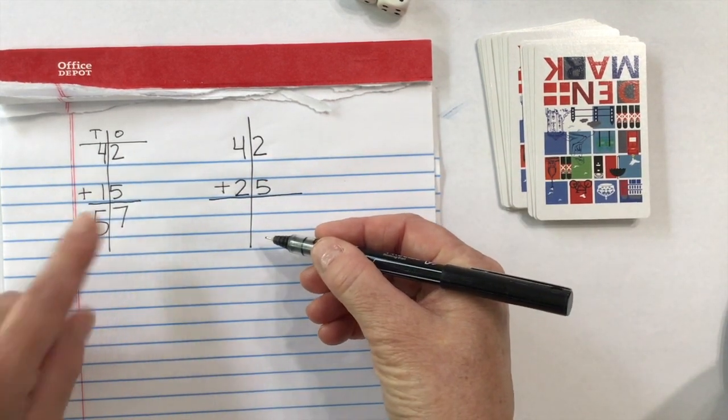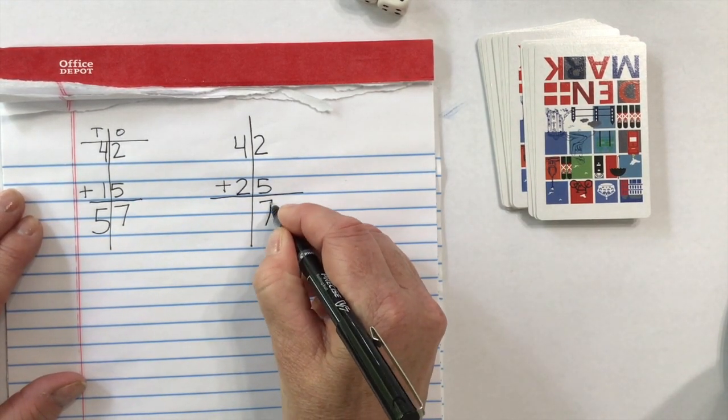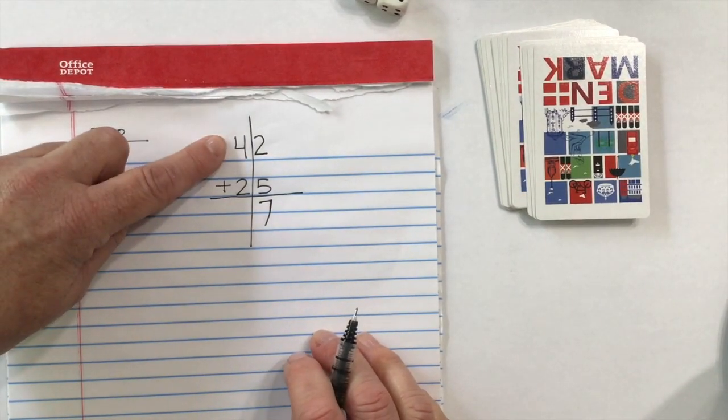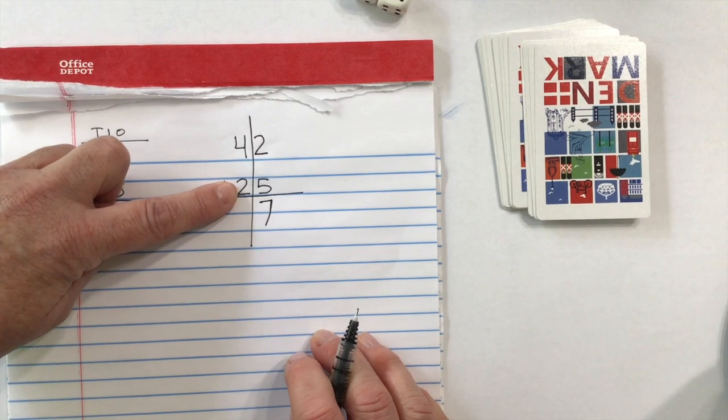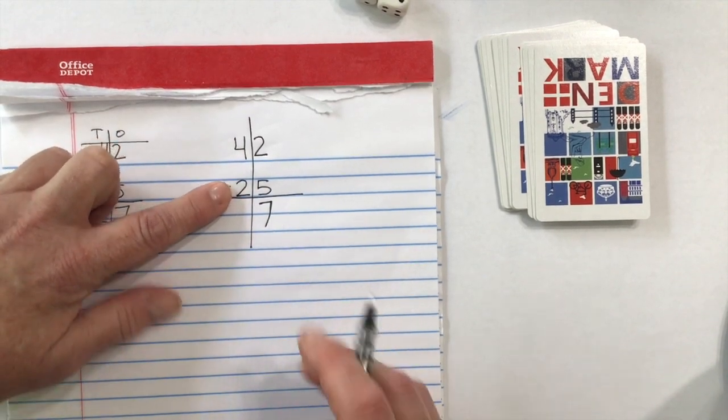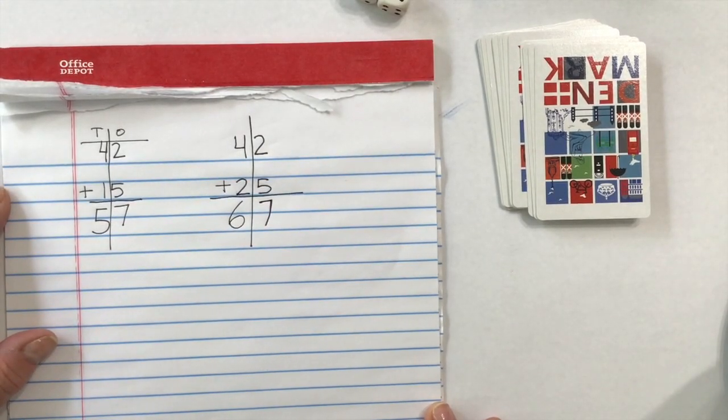Add the ones. Hey, it's the same as this over here. 5, 6, 7. Now I'm going to add my sets of 10. 40 plus 20. Four sets of 10 and two sets of 10. Six sets of 10 or 67.